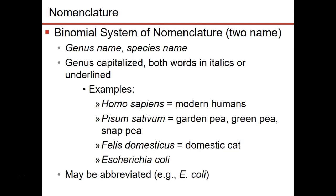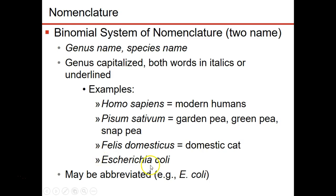We use a system called binomial nomenclature to give the name of an organism. We use both the genus and the specific epithet. The genus is always capitalized, and the species is always lowercase. Both words are either italicized or underlined. For example, Homo sapien — the human — is written with a capital H and lowercase s, italicized or underlined. Escherichia coli is always written this way, and we can abbreviate it as E. coli.